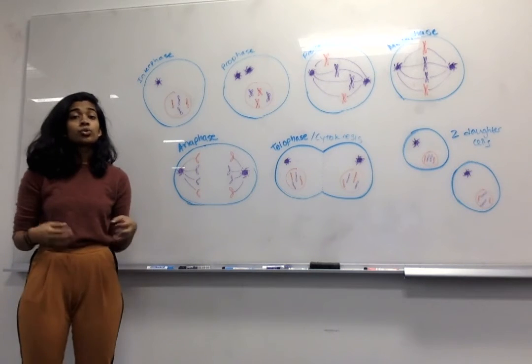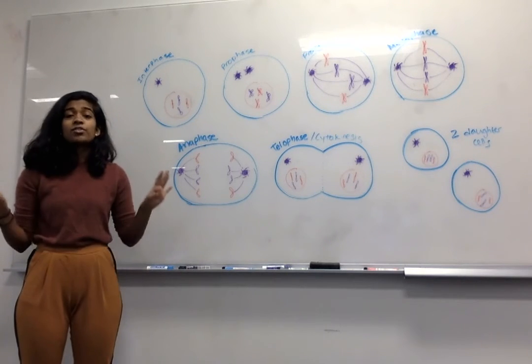Then, in anaphase, the spindles start to shorten, pulling chromatids apart and moving them towards either centrosome.